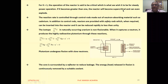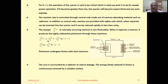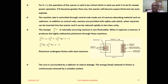Naturally available uranium is non-fissionable. It is first bombarded by neutrons and converted into plutonium, which is a highly radioactive element. The fission of plutonium then releases a large amount of energy. Coolants such as water are also used to control the temperature inside the reactor.